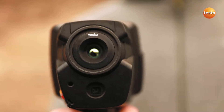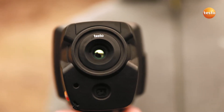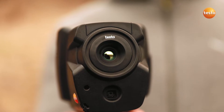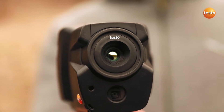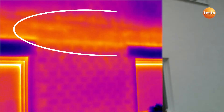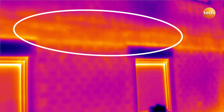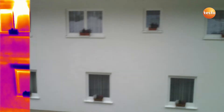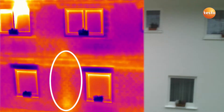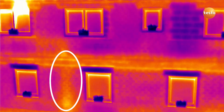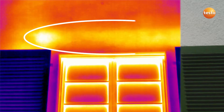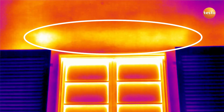Let's see which faults we can identify with Testo 872 on the facade of this building: a cold bridge along the hole of the intermediate floor, the badly insulated riser of a radiator, and an unmistakable air leak at a window lintel.